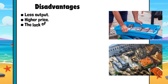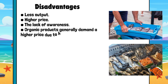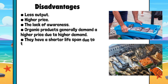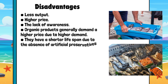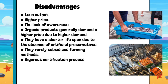Disadvantages: Less output. Higher price. Lack of awareness. Organic products generally demand a higher price due to higher demand. They have a shorter lifespan due to the absence of artificial preservatives. They rarely subsidize farming methods. Rigorous certification process.